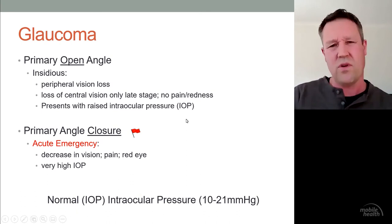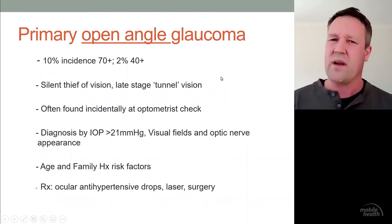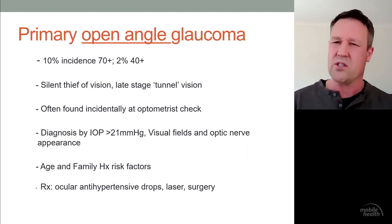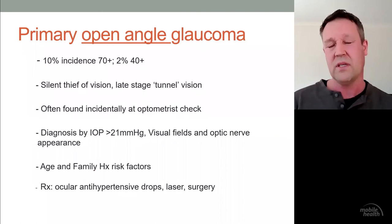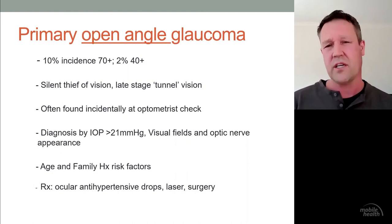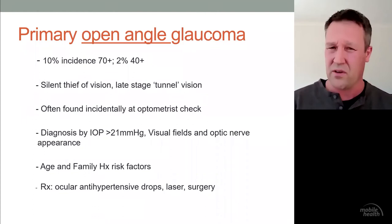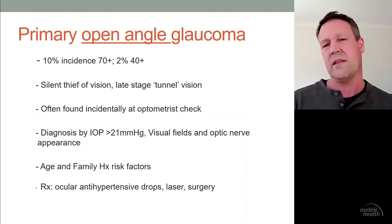Primary open angle glaucoma affects about one in ten people over the age of 70, and one in every 50 people over 40. We generally say that once you're over 40, you should have a vision test with your optometrist to rule out glaucoma, because it is treatable — the earlier you pick it up, the less problems you have in the future. Once damage occurs to your peripheral vision, you can't get that back. We call it the silent thief of vision — there's no pain or redness, you can't tell the person has it. In late stages you get what we call tunnel vision.